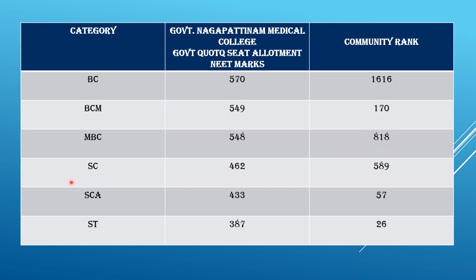SCA cutoff mark is 462 and community rank is 589. SCA cutoff is 433 and community rank is 57. STA category cutoff mark is 387 and community rank is 26. So what is the importance of knowing this community rank as well as the cutoff mark?